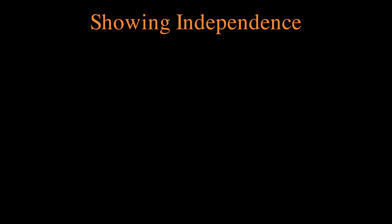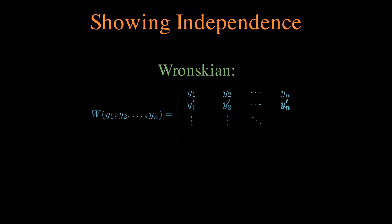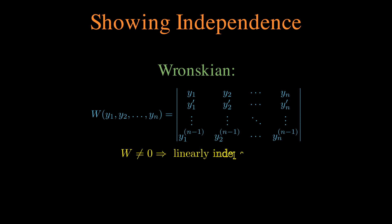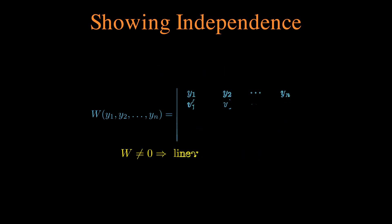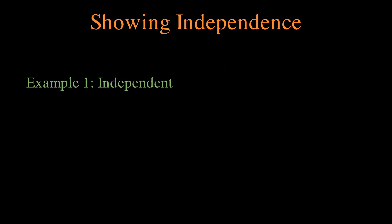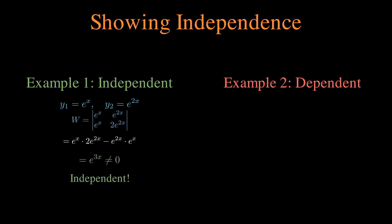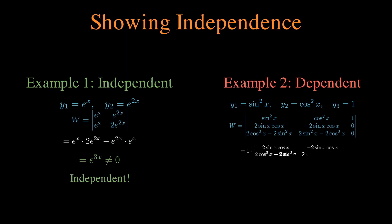Showing independence is a little different compared to linear algebra because we're dealing with functions, but one nice tool we have is called the Wronskian, which is essentially a matrix where every row is a derivative of the row above. If the Wronskian is non-zero for any x, then we know that the functions are linearly independent. We see two really nice examples where one never equals 0 and the other always equals 0.